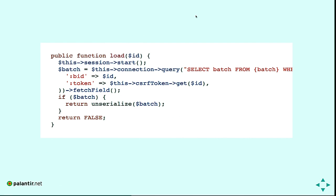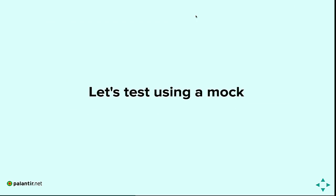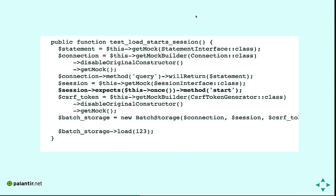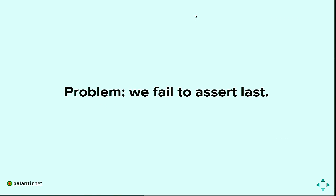The first example is batch storage. There's a method on batch storage, and I want to test that the session is started when I call load. This example uses a mock. The key line in bold says 'session expects once method start' — that's our assertion. When load is called, this executes, and if start is called it will succeed. But there's a problem: we don't assert last. This is why spies are useful.